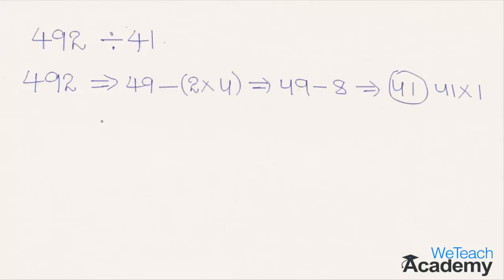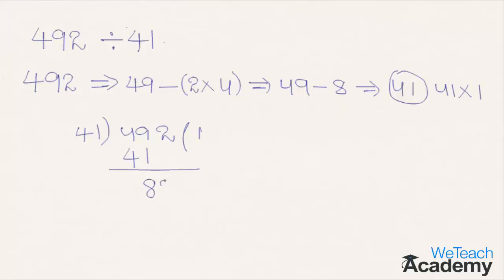Let us verify by dividing 492 by 41 directly. 41 goes 1 time into 41, leaving a remainder of 8. Bringing down the next digit 2 gives us 82, and 41 times 2 is 82. Since the remainder is 0, we confirm that 492 is exactly divisible by 41.